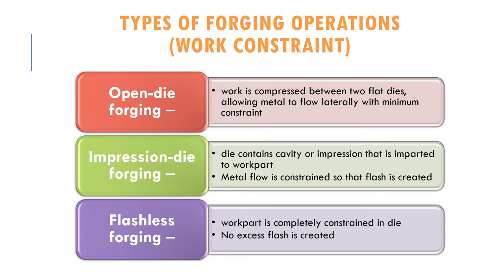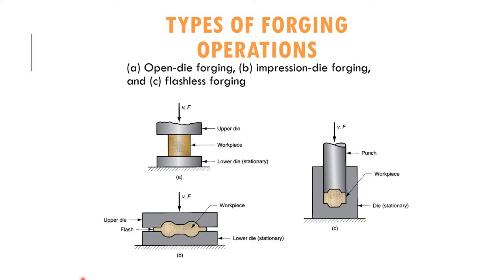We can classify forging operations in terms of work constraint. There are three types. First is open die forging, where the work is compressed between two flat dies with no wall in between. Second is impression die forging, where the die contains a cavity to impress the work part into a desired shape — metal flows into the cavity and creates flash. The third type is flashless forging, where the work part is completely constrained in the die, so no excess flash is created.